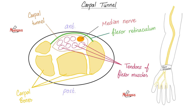These are the tendons of the flexor muscles that are passing underneath or deep to the flexor retinaculum. How many carpal bones do you have? The answer is eight carpal bones in each wrist. But how many tarsal bones do you have? The answer is seven. The carpal bones are in your wrist, but the tarsal bones are in your ankle.